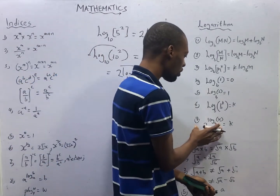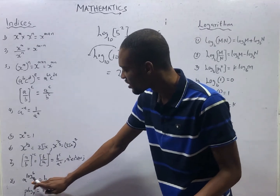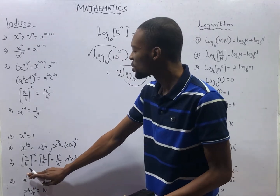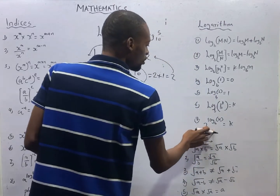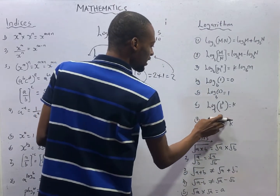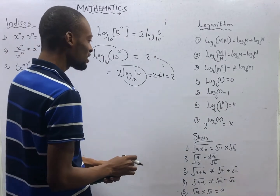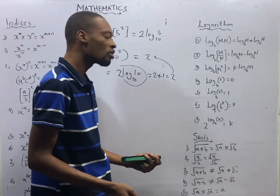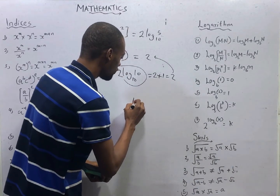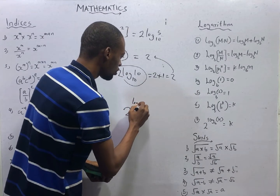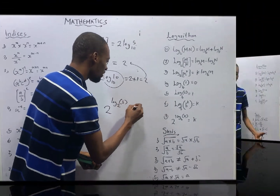The seventh law is what we already explained under the law of indices: a raised to the power of log b over b equals a. So 2 raised to the power of log 2 over 5 equals 5, as seen in logarithms.